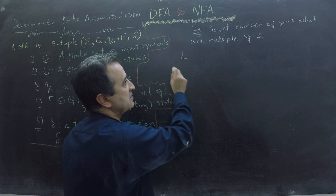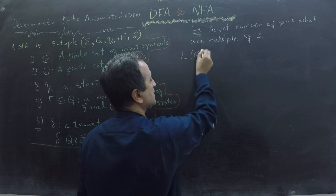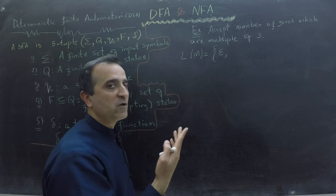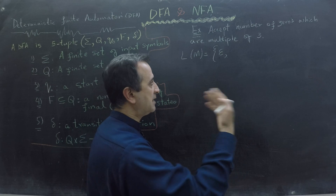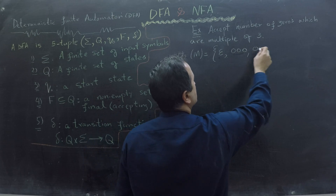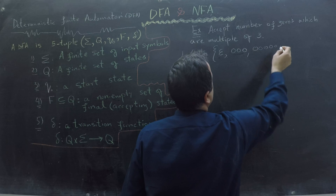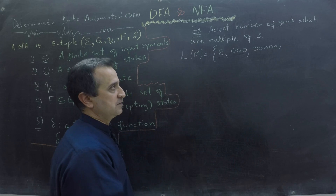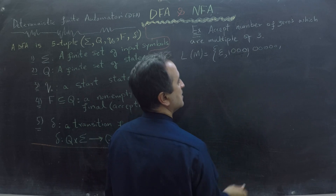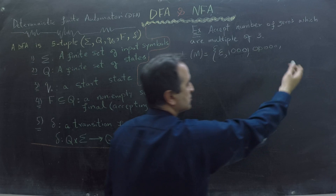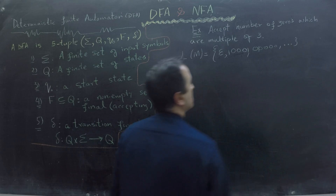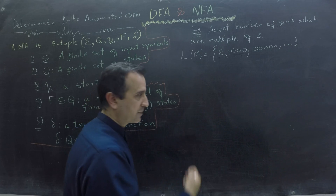The language of this machine M is that it can accept the empty string, because the number of zeros equal to zero is a multiple of three. It will accept three zeros, it will accept six zeros, and so on. It will also accept any number of ones, so three zeros could have ones interspersed. This language accepts zeros in multiples of three and any number of ones.